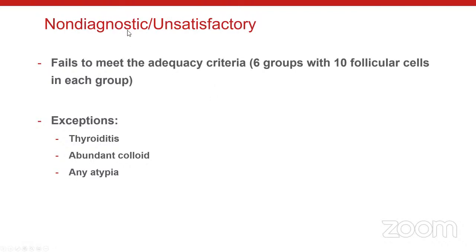In the second edition, diagnostic terms with a slash mean your institution should pick one and use it consistently to avoid confusion. For the non-diagnostic category, six groups with at least 10 well-visualized follicular cells per group remains a good adequacy criterion, preferably on one slide. This is not evidence-based — some have proposed fewer as three groups, but there's not enough data to support reducing the requirement yet.